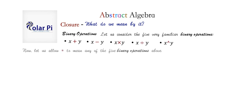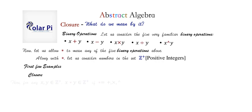All right, now let's allow for star to be any of the five binary operations displayed. Then, if we consider our set to be the set of positive integers, so that's like one, two, three, and so on, then we see that we get closure under addition, multiplication, and exponentiation.